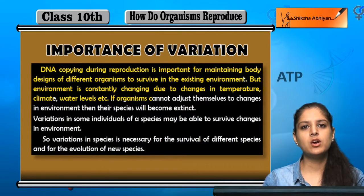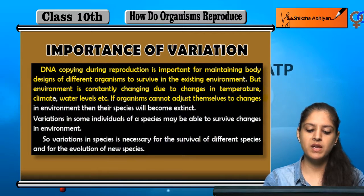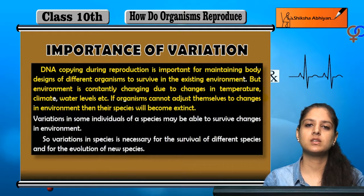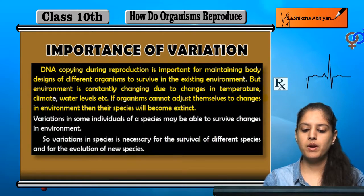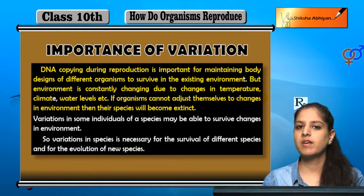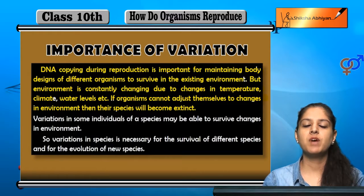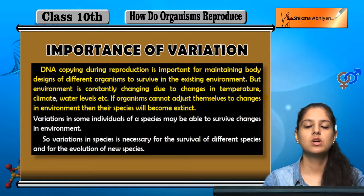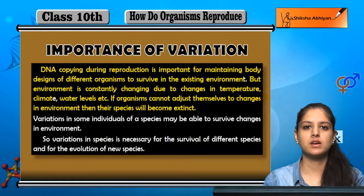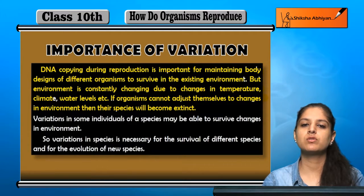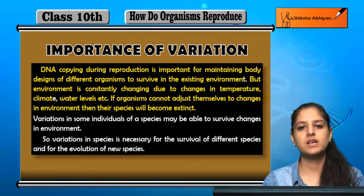Agar yahi organism apne aap ko in changes mein adjust hi na kar paye environment ke, toh unki species extinct ho jayengi, khatam ho jayengi. Agar koi ek organism hai, aur woh survive kar raha hai abhi tak ek environment mein — suddenly environment mein change aana shuru ho gaya, aur woh change uske liye favorable nahi hai, woh change usko apne survival ke liye thik nahi rakh raha — so woh us change ko adapt nahi kar payega, aur ultimately us change ko woh succumb kar jayega. Aur uske baad uske jo species hain, woh extinct ho jayengi.